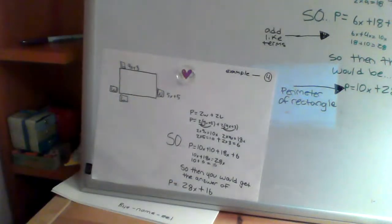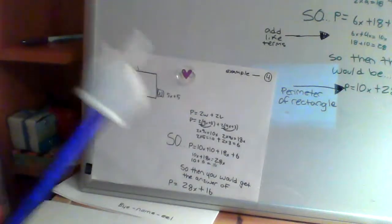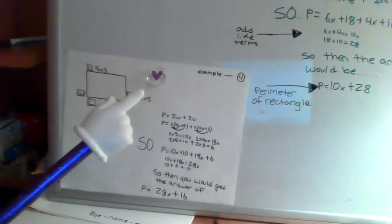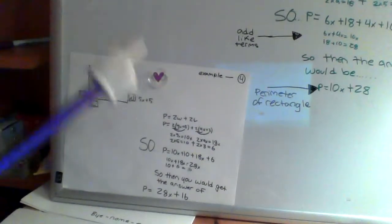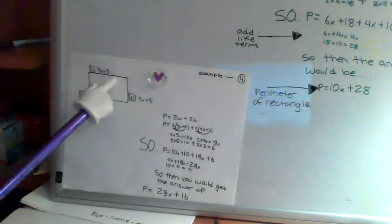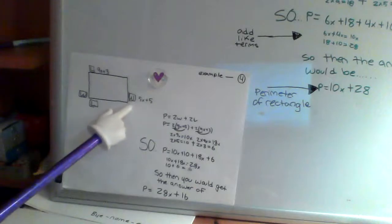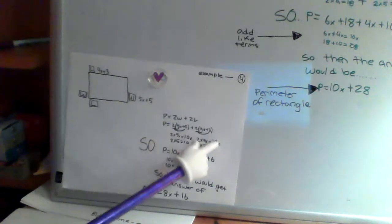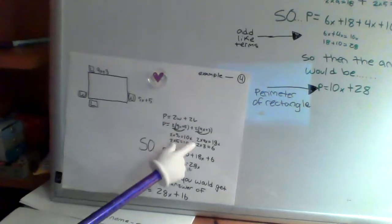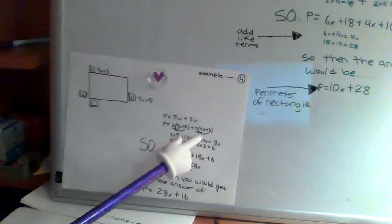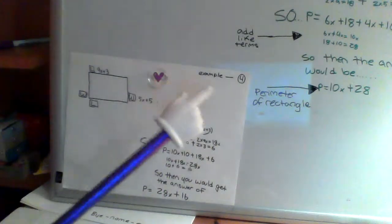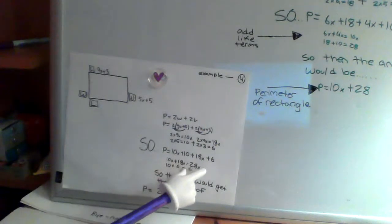This is going to be the last example, just to make sure you understand how to find the perimeter of a rectangle that has binomial expression sides. This last rectangle has 9X plus 3 as the length, and 5X plus 5 is the width. So 2 times 5X equals 10X, and 2 times 5 equals 10. And then 2 times 9X equals 18X, and 2 times 3 equals 6. So you'd write that as 10X plus 10 plus 18X plus 6.